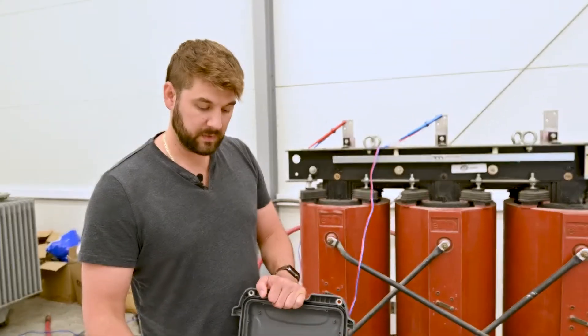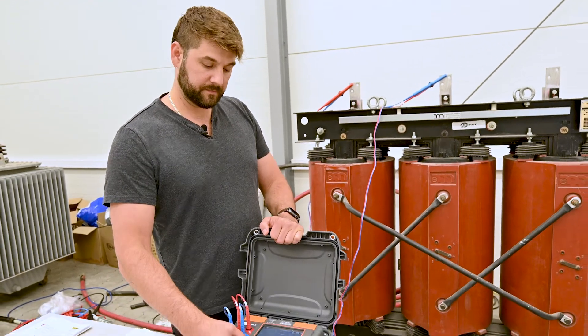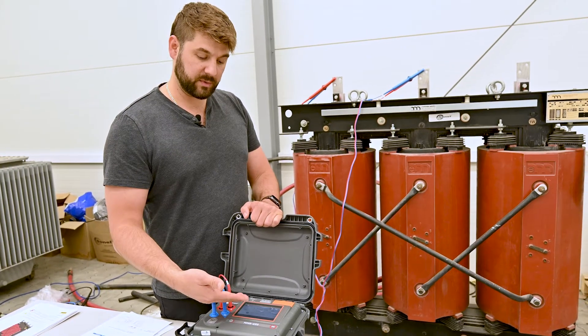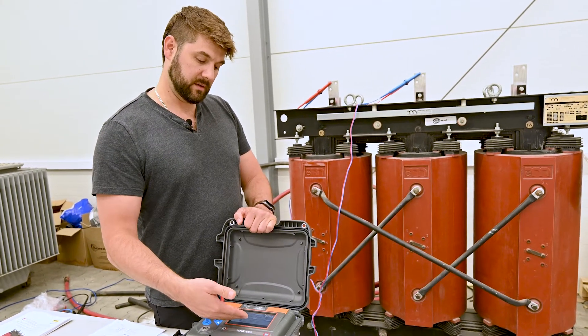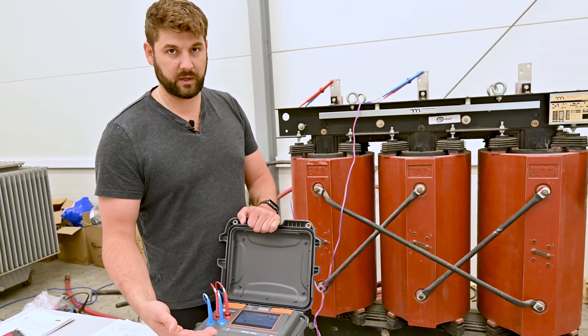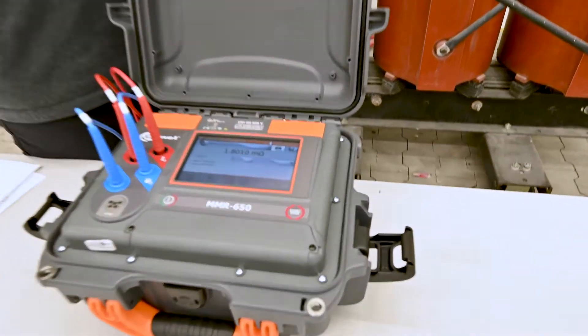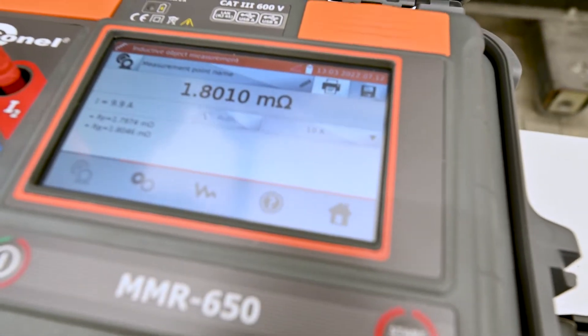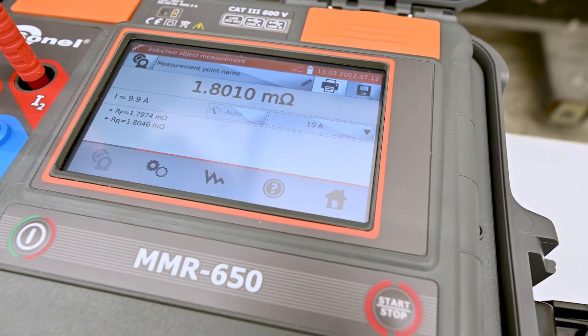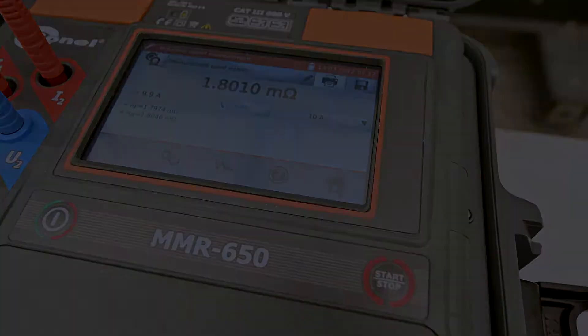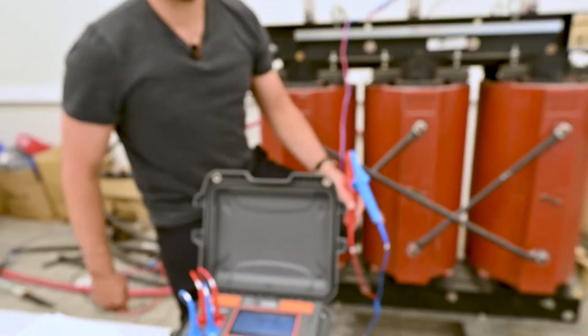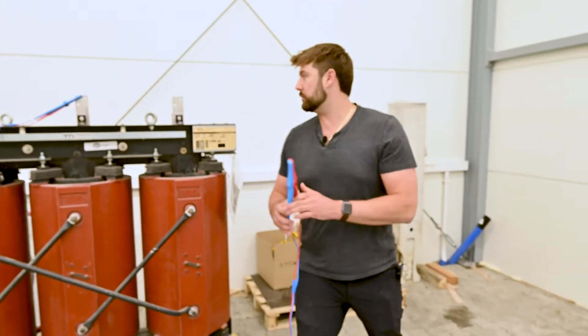Now that the measurement's been completed, the instrument's going to go ahead and automatically discharge. Now that it's beeped, we know that it's done and our final result is 1.801. Going to the other winding.